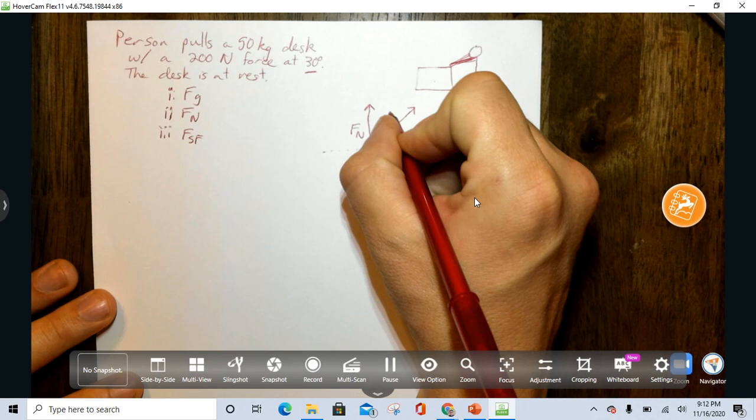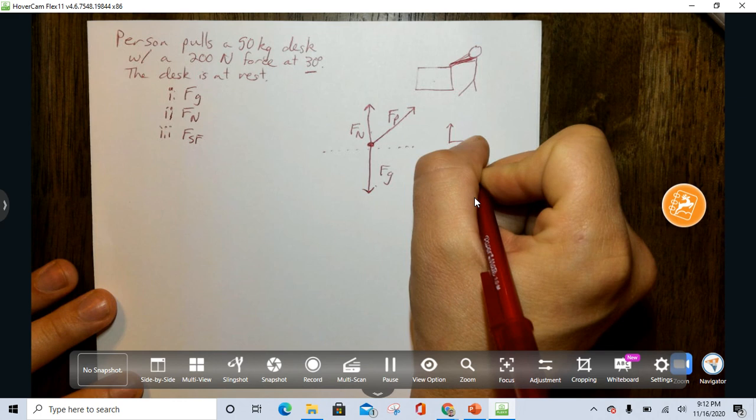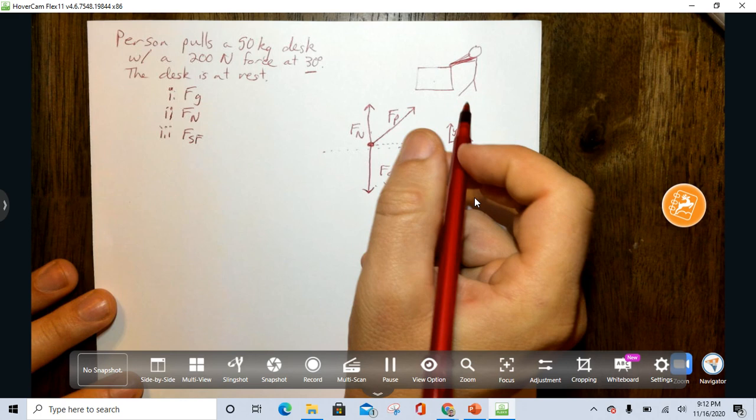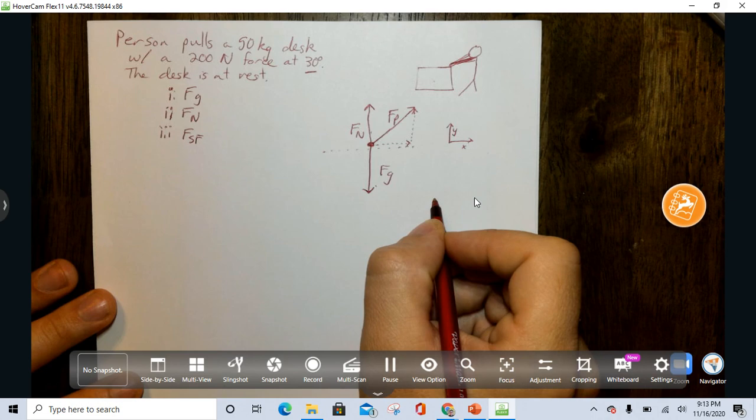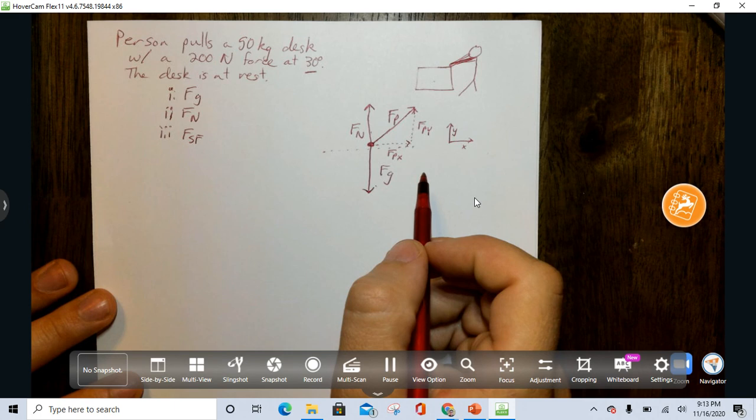30 degrees, so we can call that FP, and we can see FN and FG are going to line up really nicely with an X and Y axis, but FP doesn't, so it needs to be broken down into its components. So it's going to have an X component and a Y component, and we'll call this FPX, and we'll call this FPY.